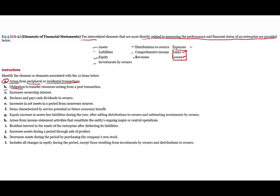B: obligation to transfer resources arises from past transaction. Once I said obligation, obligation means you owe someone money — to transfer resources, usually assets, arising from past transactions. A liability is that definition. Liability is an obligation — you have to provide resources, assets, to someone because of an obligation from a past transaction. Something happened in the past: you borrowed money, you bought goods and services on account, whatever that is, and you incurred a liability.